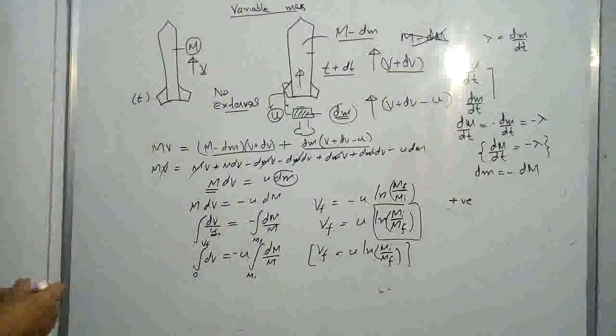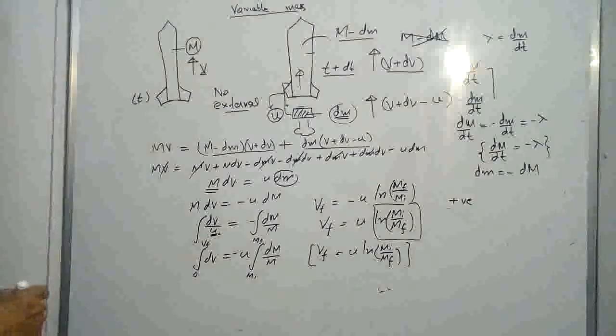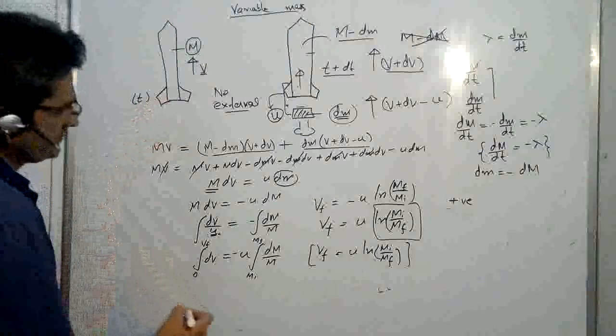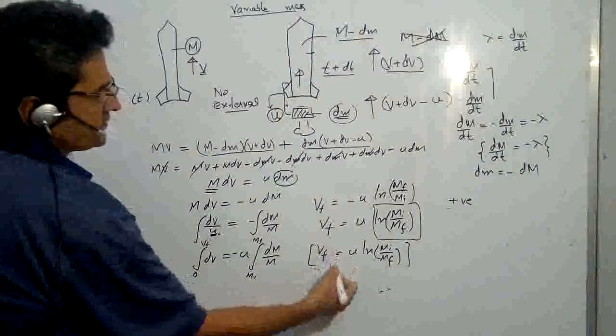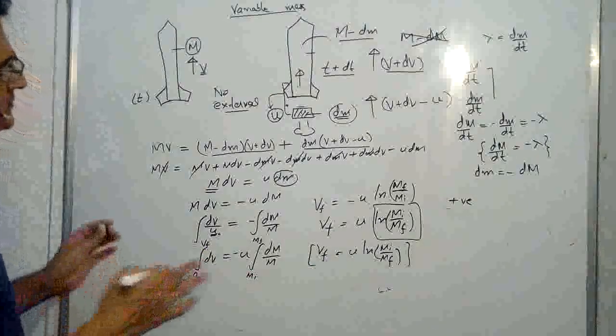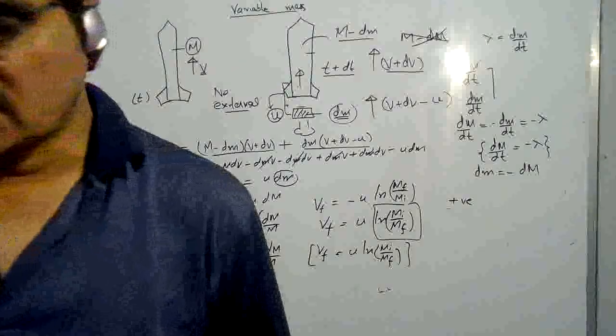If we take the initial velocity as vi, then it will be v final minus vi like that. So this is just a simple form for rocket propulsion.